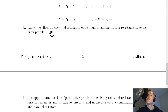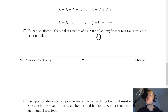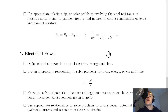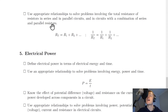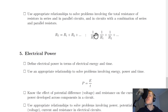You need to know the effect on total resistance of adding further resistors in series or in parallel. Adding resistors in series increases total resistance. Adding resistors in parallel decreases total resistance. Use these relationships: for series, RT = R1 + R2 + ...; for parallel, 1/RT = 1/R1 + 1/R2 + ... You also need to solve problems in combination (mixed) series and parallel circuits.